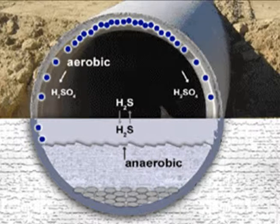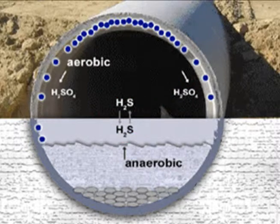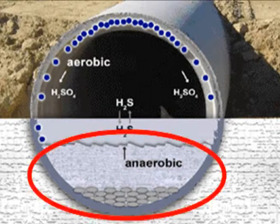The corrosion of sewers results from a series of chemical reactions in which two types of bacteria participate: aerobic and anaerobic bacteria. Aerobic bacteria require oxygen for their metabolism, whereas anaerobic bacteria do not. In every sewer there are two distinctive zones: